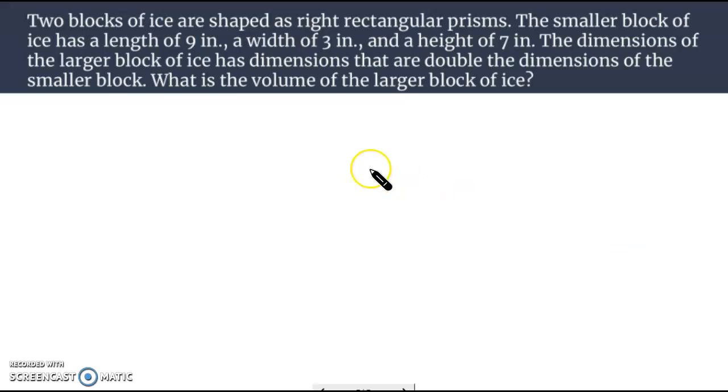And finally here, it says two blocks of ice are shaped like right rectangular prisms. The smaller block has length 9, width 3, height 7. The dimensions of the larger block has dimensions that are double the dimensions of the smaller. What's the volume of the larger block?